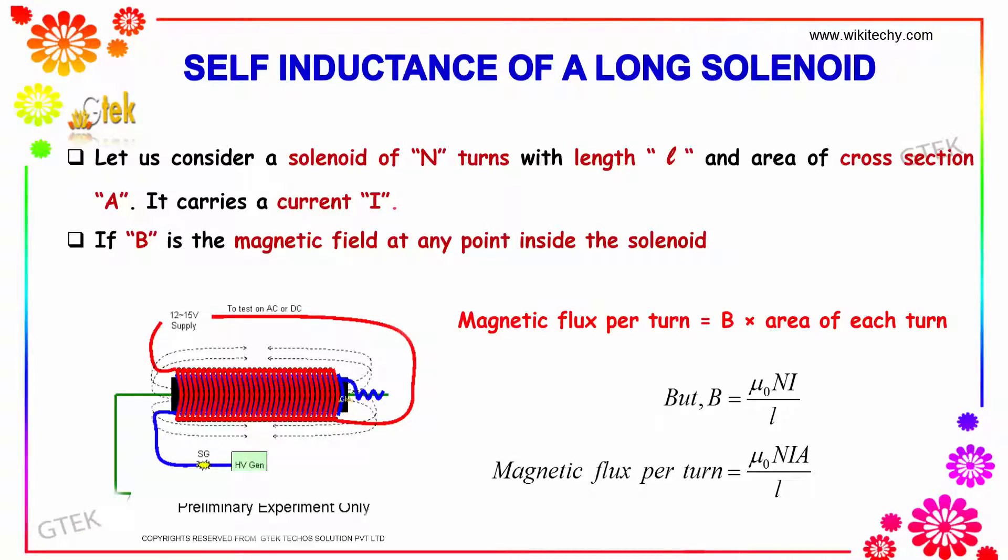If B is the magnetic field at any point inside the solenoid, the magnetic flux per turn equals B times the area of each turn. B equals μ₀NI divided by L.